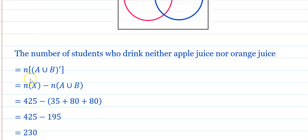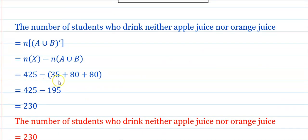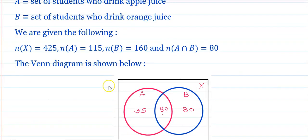The number of students who drink neither apple juice nor orange juice equals n(X) minus n(A union B). n(A union B) = 35 + 80 + 80 = 195. Therefore 425 minus 195 = 230. The number of students who drink neither apple juice nor orange juice is 230.